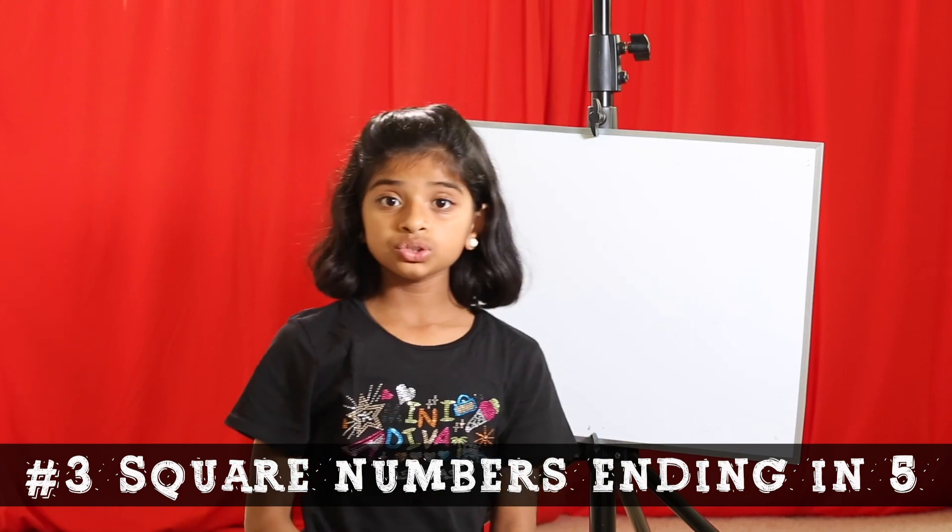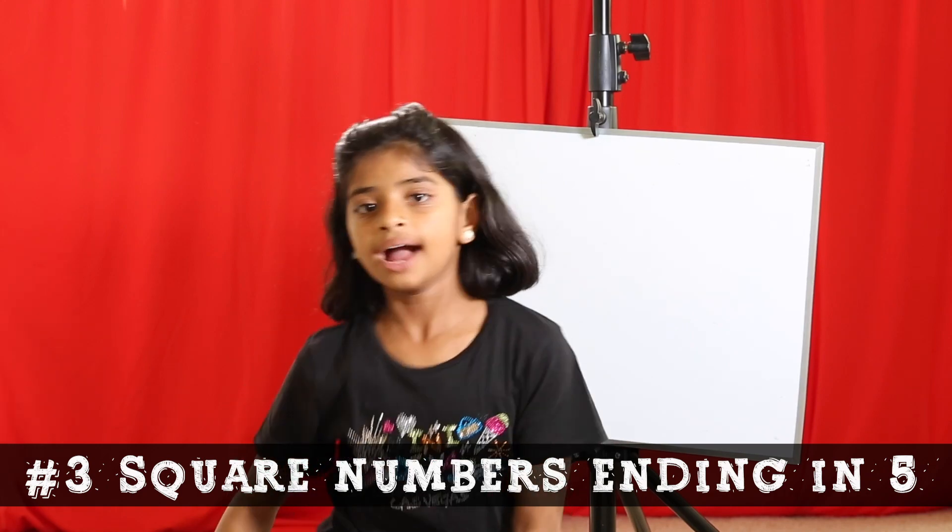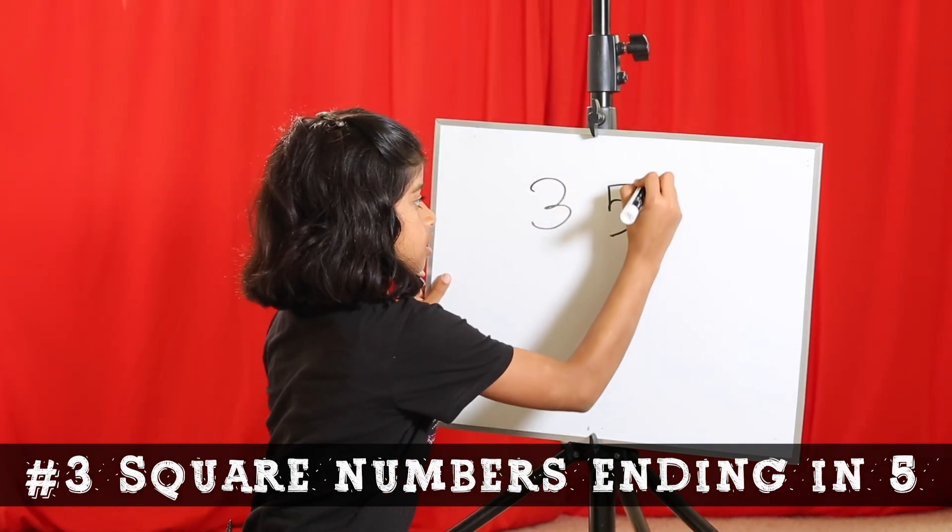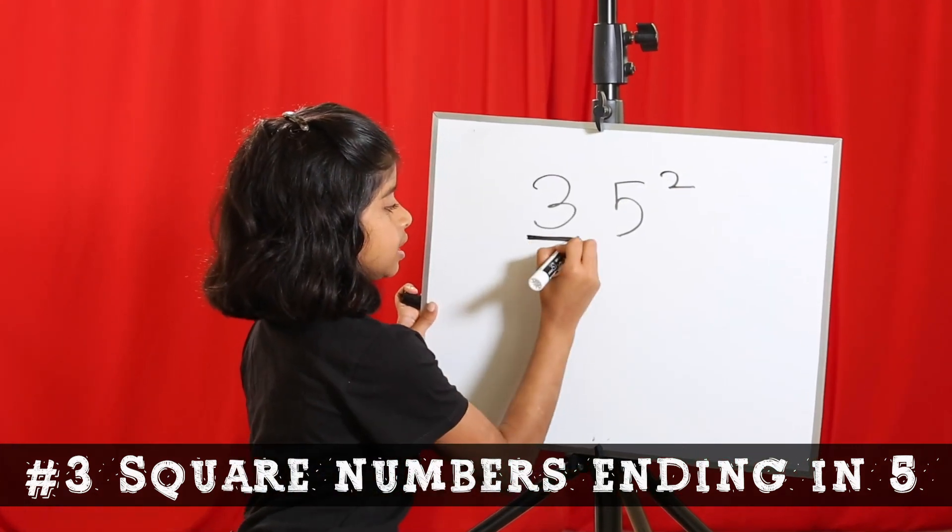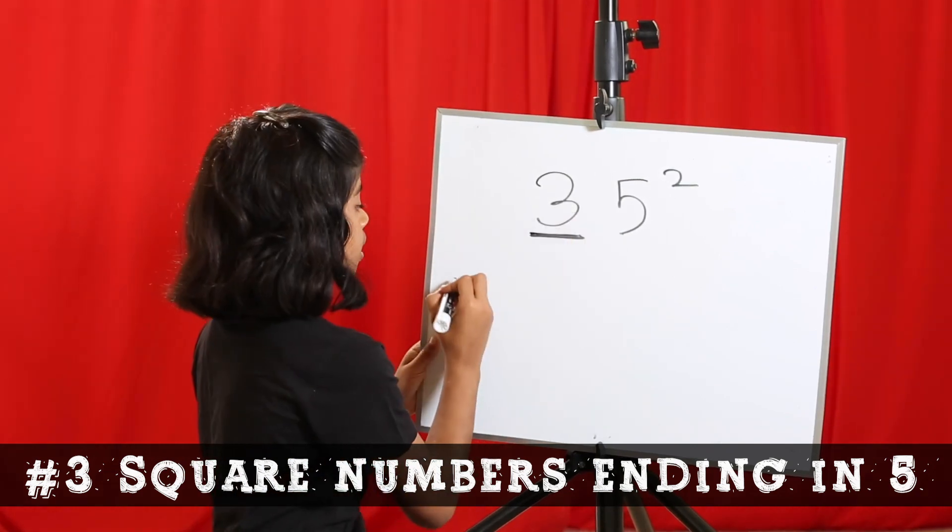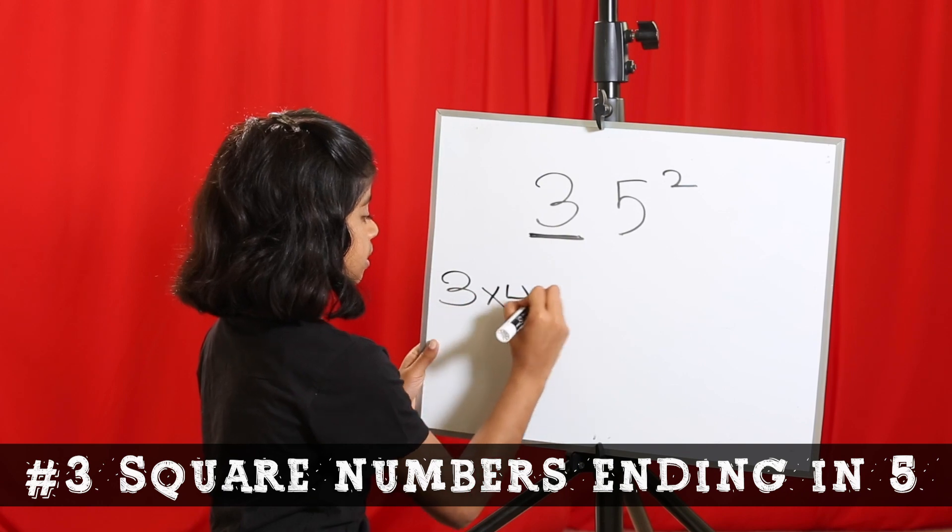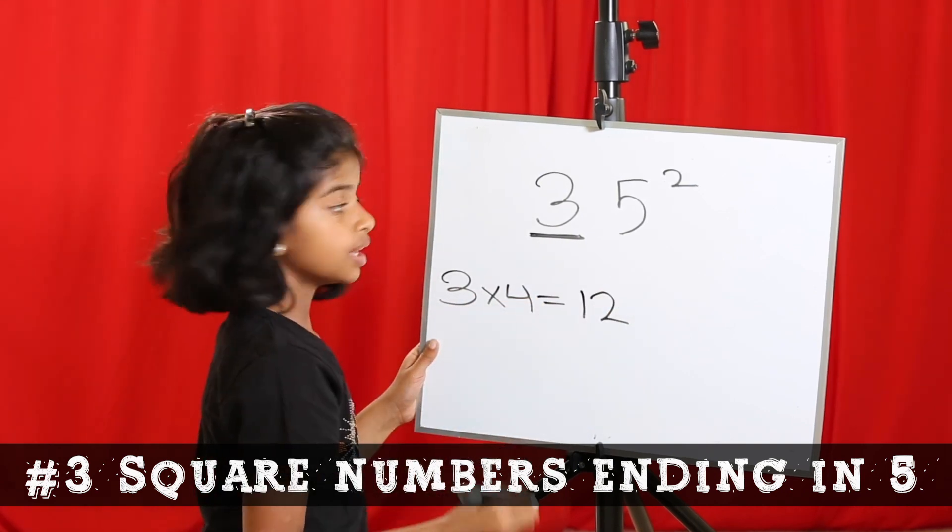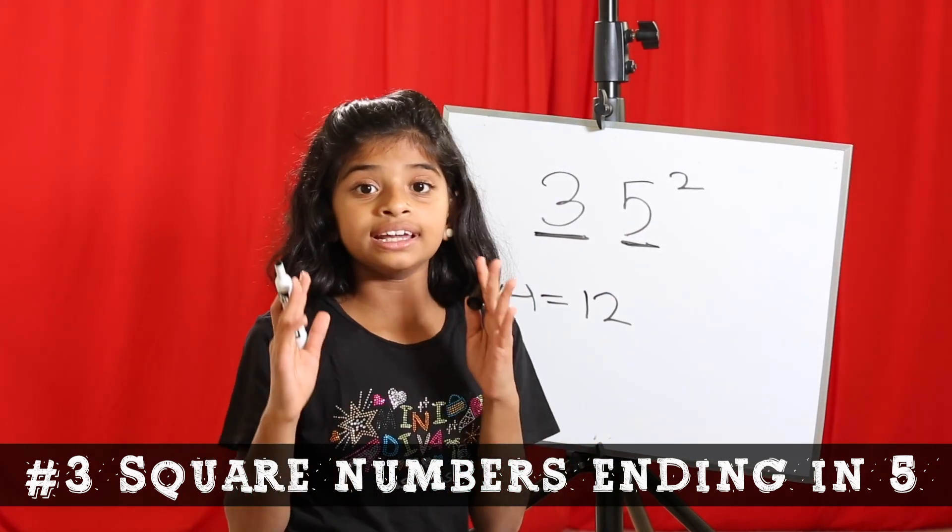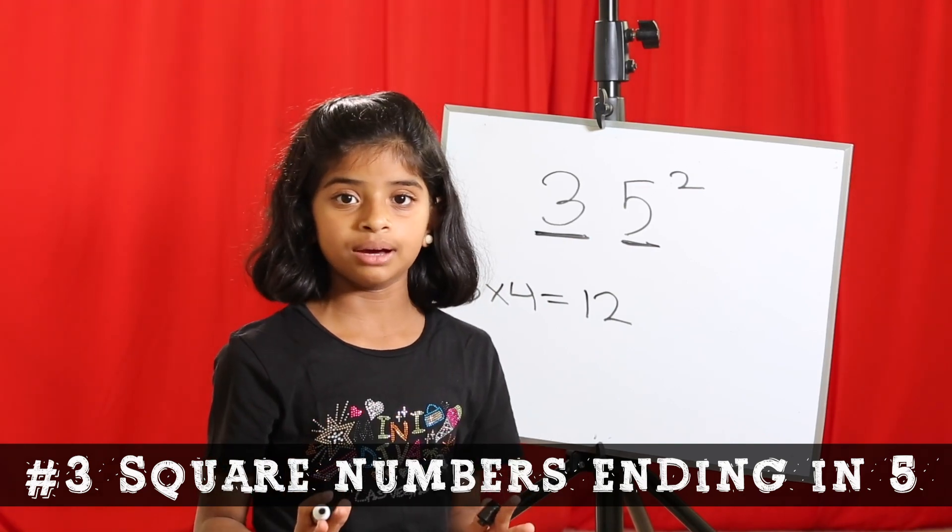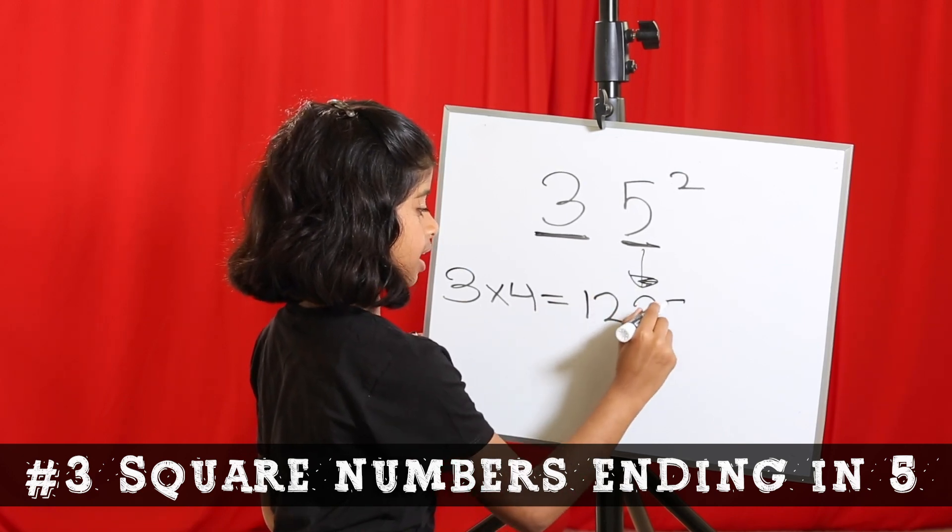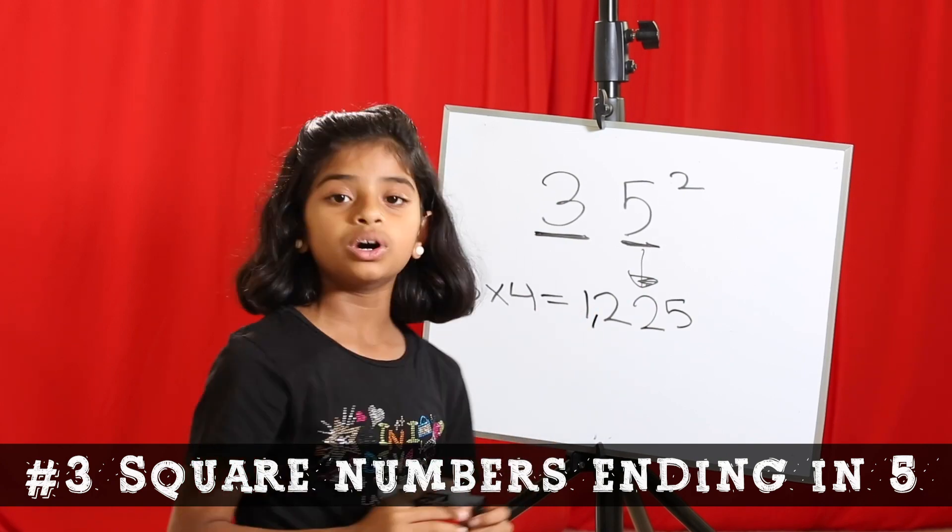Trick number 3. How to square any number ending in 5. I'm going to choose the number 35 to start off with. First, let's look at the 3. You need to multiply 3 by the next number. So the next number is 4. So 3 times 4 is 12. Now, let's look at the 5. Any square ending in 5 always ends with the number 25. So we know that here, it's going to be 25. So the answer is 1225.